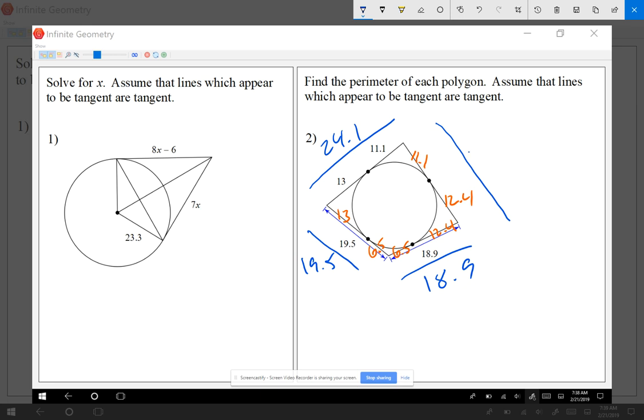All right. Then at the end, I'm just going to add the sides. Let's see. I have 23.5 plus 24.1, 19.5, and 18.9. Let's see. I have 10, 19, 23, 26, 86. All right. Any questions on these?